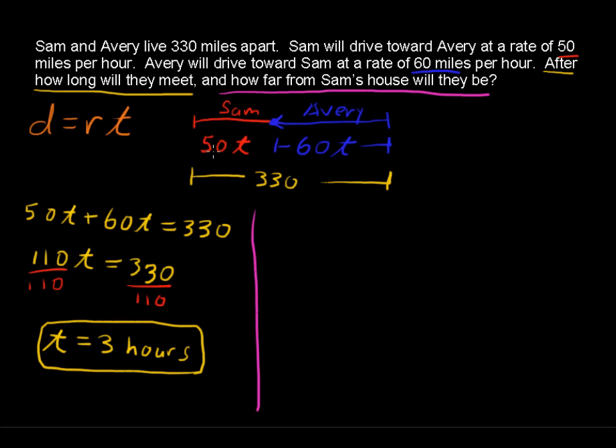Well, the distance that Sam is traveling again is 50T. So this distance equals 50 times our T, and that is 3 hours. So they will be 150 miles from Sam's house.